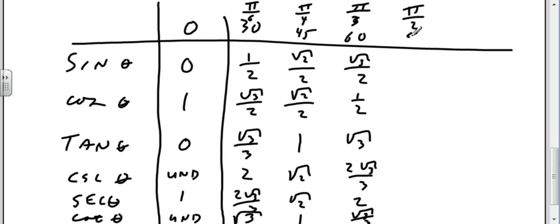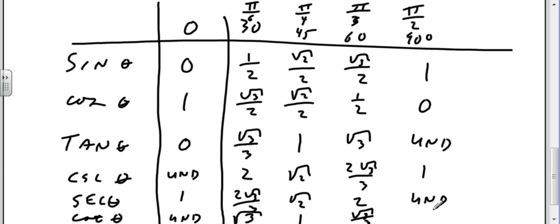At pi over two, 90 degrees: sine is one, cosine is zero, tangent is undefined. Cosecant is one, secant is undefined, and cotangent is zero. So I could do that — big deal. I can pass my SAT exam. If you look in the front cover of your book — you don't have that, bummer — so you have to remember, but your calculator's going to give it to you anyway, so I wouldn't really worry too much about it.